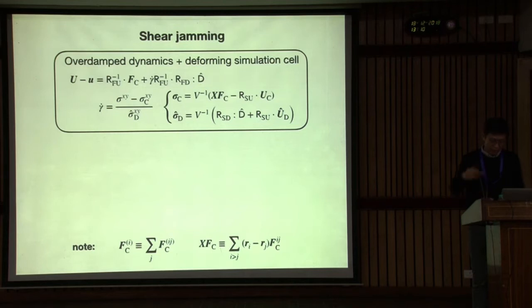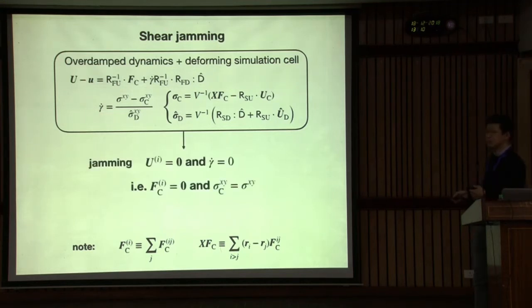Then, over time, I start from completely relaxed initial configuration by Brownian simulation. Then I start this time evolution following this. Then, at a certain point, the system cannot flow more. This is jamming. All particle velocity becomes zero and gamma dot becomes zero.